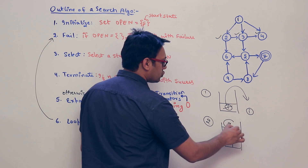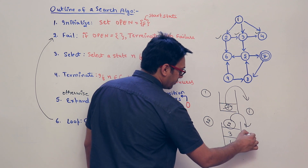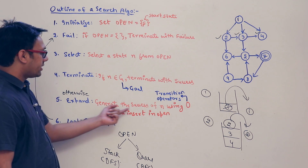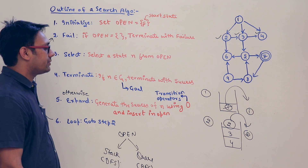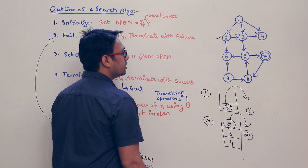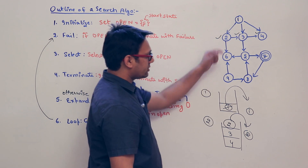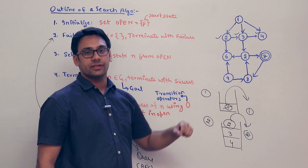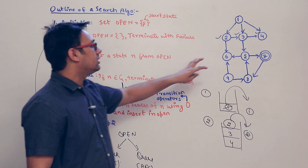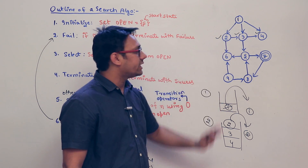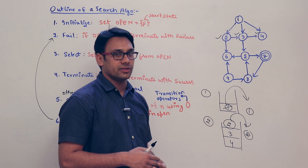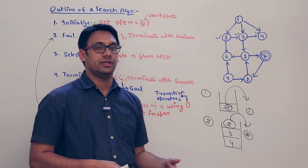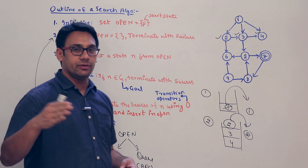We take 2 out and check: is 2 a goal state? No. So we expand and generate the successors of 2 using the operator and insert into open. The successors of 2 are 3 and 6. However, 3 is already inside the stack. Here we have not defined any specific mechanism to detect that — in practice we maintain a 'closed' data structure for this, which we will discuss in later videos. So for simplicity, we take 6 and insert it into open.